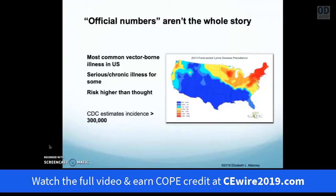The official numbers are often misrecorded. The prevalence of tick-borne disease in the US is greater than 300,000 according to the CDC at this time, and there are many other cases that are not even recorded. It is a serious and chronic illness for many.